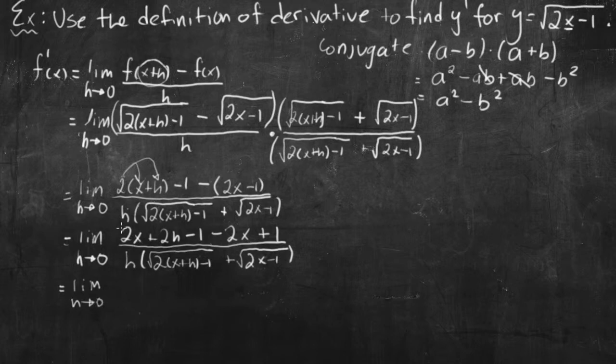Limit as h goes to 0. So my 2x's cancel. 2x subtract 2x is just 0. And then my negative 1 and 1 cancels. So if you look what's going to happen, all I have left on the top is this 2h, and all I have left on the bottom is this h. So really what I can do is cancel that h with this h now.